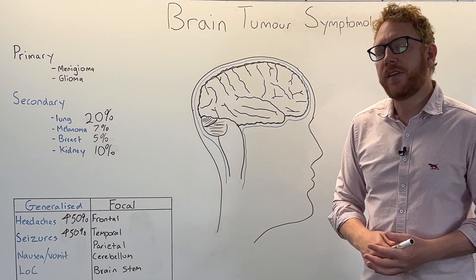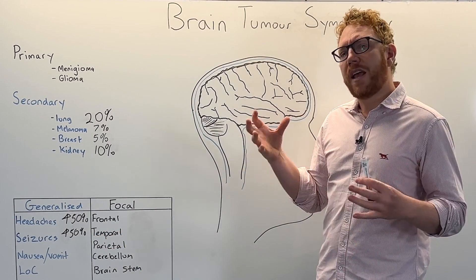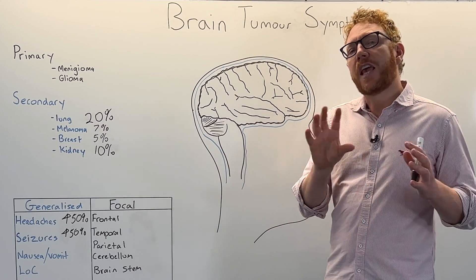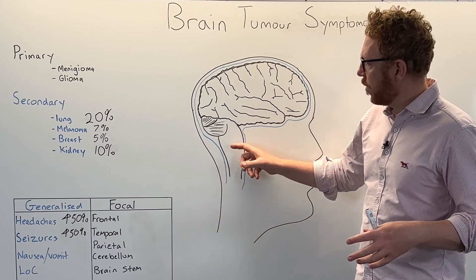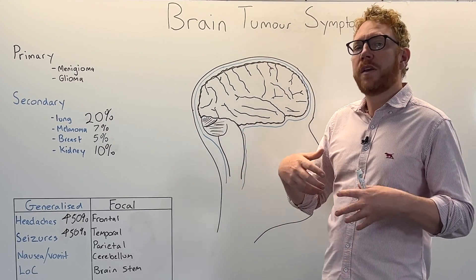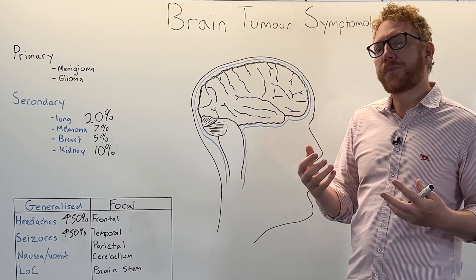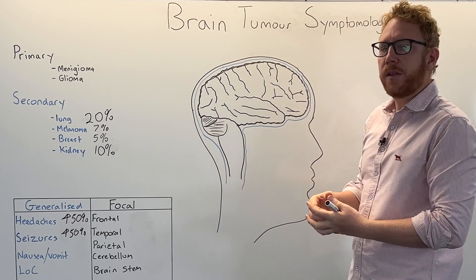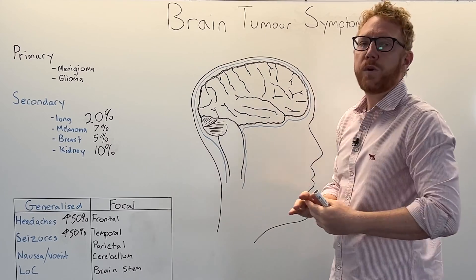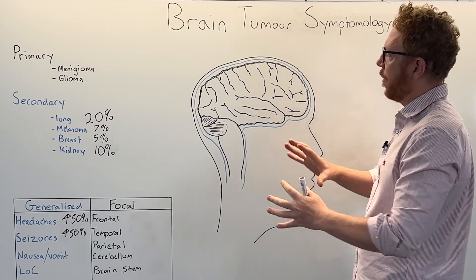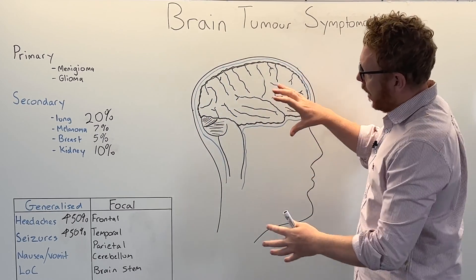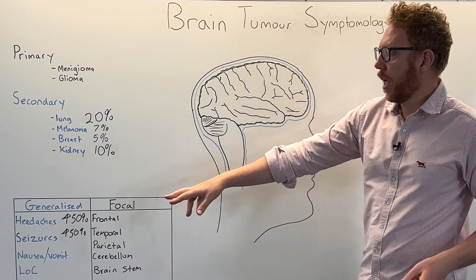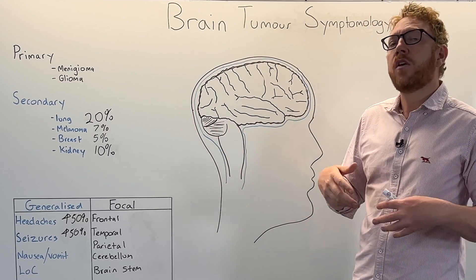Nausea and vomiting are also very common in brain tumours. The nausea and vomiting centre of the brain, located in the brainstem, is known as the chemoreceptor trigger zone - a group of neurons that process information to induce nausea or vomiting. When the brain is swollen or a tumour increases the space within the skull, it raises intracranial pressure, which can compress parts of the brainstem and irritate this centre, inducing the feeling of nausea or wanting to vomit.